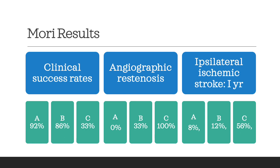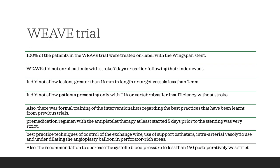Angiographic restenosis at one year: Mori A is 0%, B is 33%, and C is 100%. Ipsilateral ischemic stroke at one year: Mori A 8%, B 12%, C 56%. This shows that in chronic occlusions (Mori C) we should not even be trying to open them, and lesion morphology makes a big difference to final outcome.